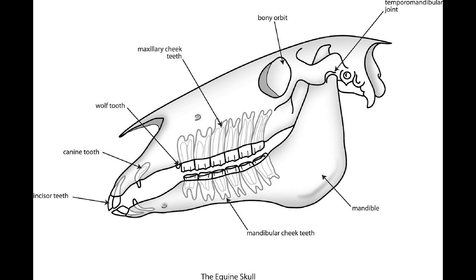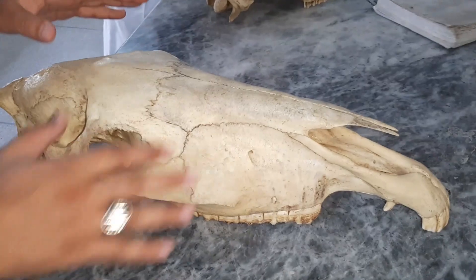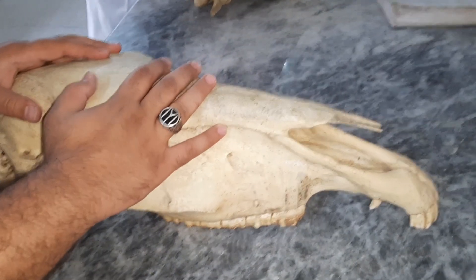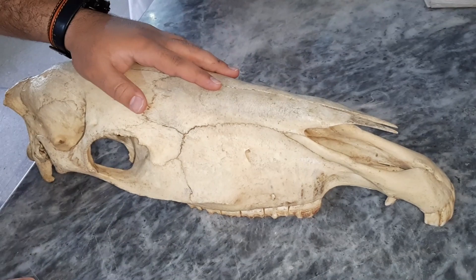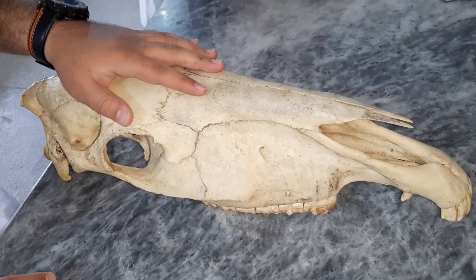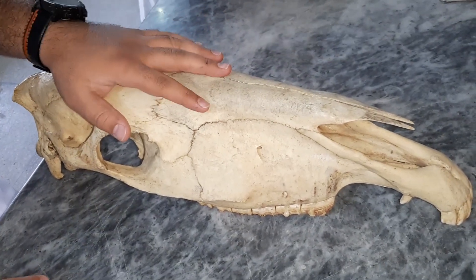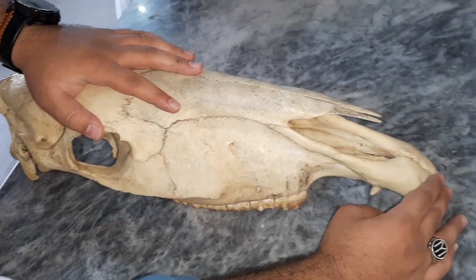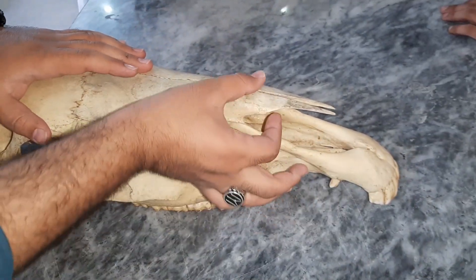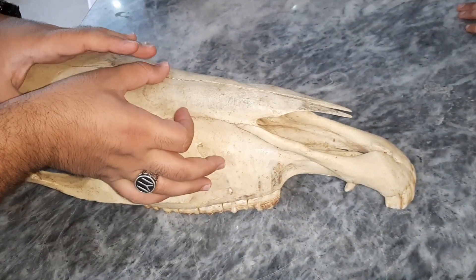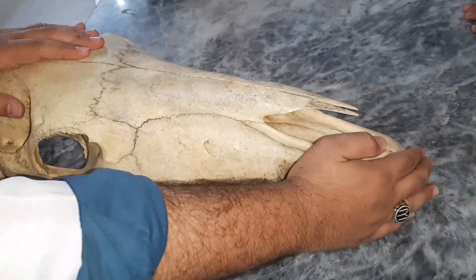Hi guys, welcome to our YouTube channel. Today we are going to discuss the skull of a horse. We are going to discuss the dorsal side first. This is the incisive bone, this is the nasal bone.